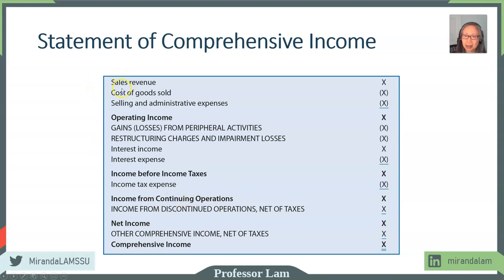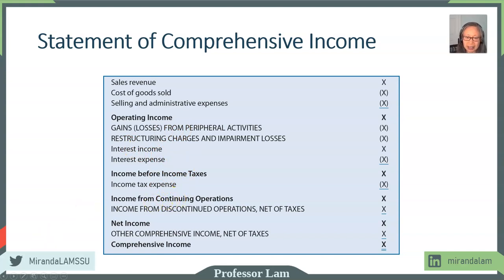Sales, cost of goods sold, SG&A — those we know will always continue. But will peripheral activities and restructuring recur on a continuing basis? Should we incorporate them into our forecast? That's what we're going to look at with some special events.